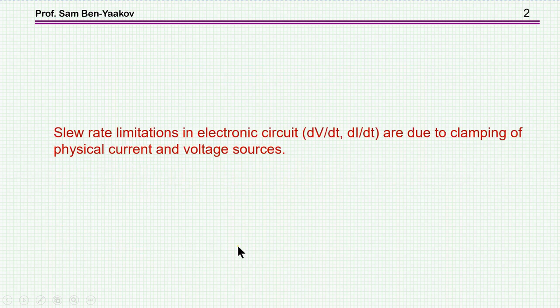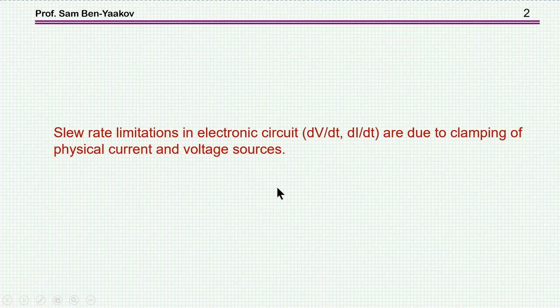So what is slew rate? Slew rate limitations in electronic circuits are due to clamping of physical current and voltage sources. That is, in a physical system, currents and voltages cannot go beyond a certain level, and this brings about a limitation of the rate at which voltage is rising — the dV/dt — and the current is rising — the dI/dt. This is the subject of this presentation.